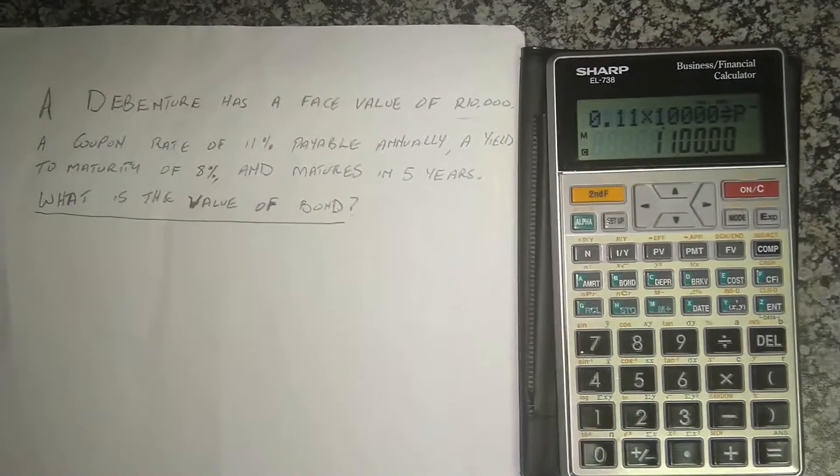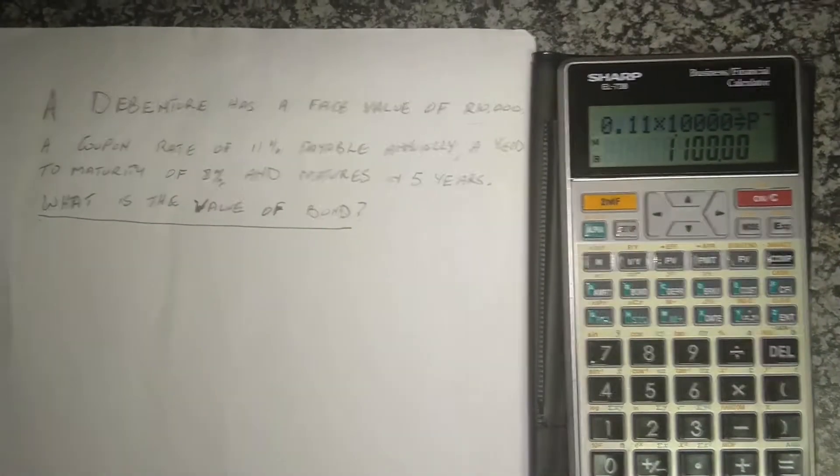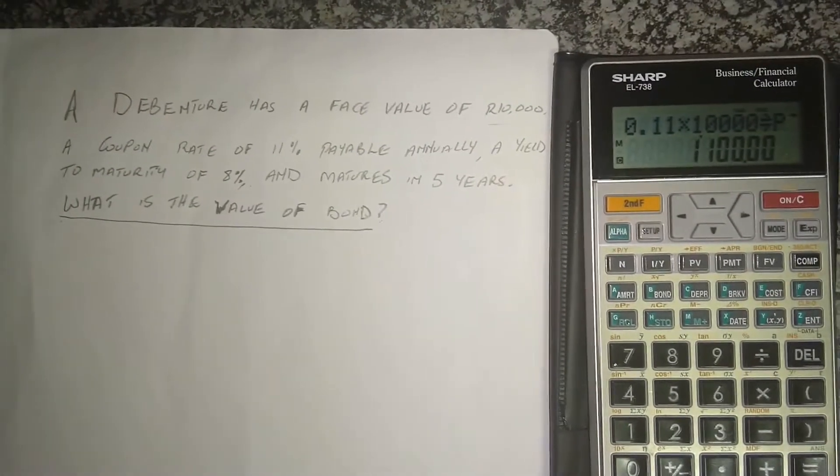And I'll do it again: eleven percent times ten thousand rand and then I press PMT. That is the recurring payments. So you don't have to do it like that, you can just type the 1,100 and press PMT, but I just did it that way in order to show you.